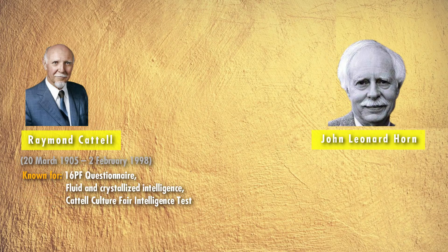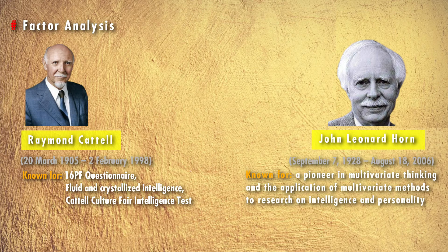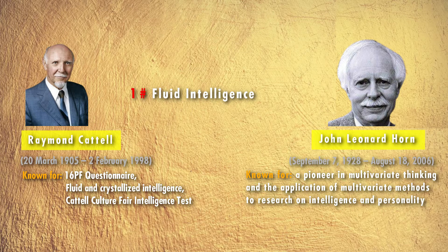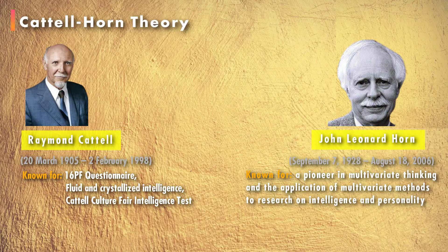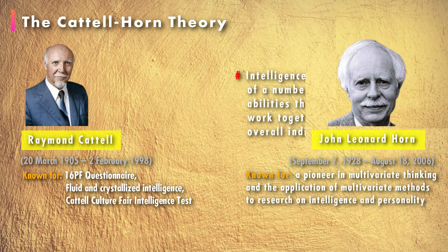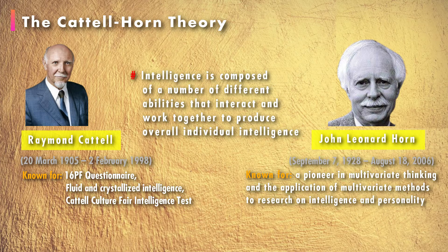In the 1960s, American psychologists Raymond Cattell and John Horn applied new methods to factor analysis and concluded that there are two kinds of general intelligence. Raymond Cattell first proposed the concept of fluid and crystallized intelligence and further developed the theory with John Horn. The Cattell-Horn theory suggests that intelligence is composed of a number of different abilities that interact and work together to produce overall individual intelligence.